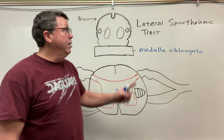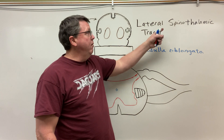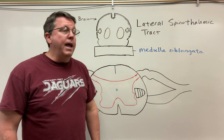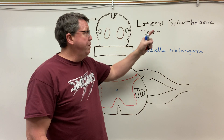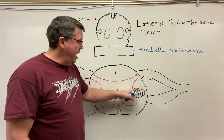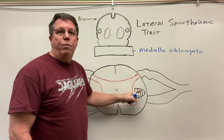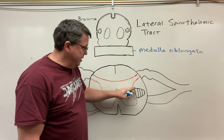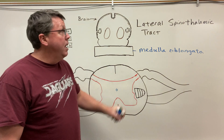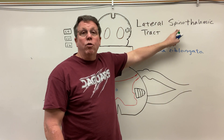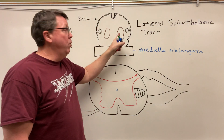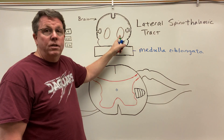Today we're going to be talking about the lateral spinothalamic tract. Like the name implies, the lateral spinothalamic tract can be found in the lateral portion of the spinal cord — it's this cone shape right here. Also like the name implies, it goes from the spine up to the thalamus.